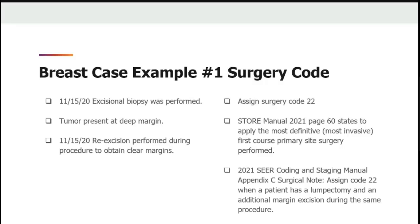We will assign surgery code 22. In the STOR manual under page 60, it states to apply the most definitive primary site surgery under first course treatment. SEER states to assign code 22 when a patient has a lumpectomy and an additional margin excised during the same surgical event. According to the Commission on Cancer, a re-excision of the margins intraoperatively during the same surgical event does not require additional resources such as anesthesia, an OR, and surgical staff.